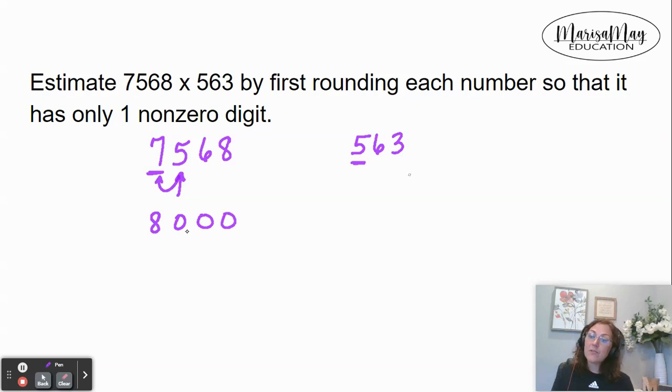Now we'll do the same thing over here with the 563. We're going to focus our attention on the digit just to the right. Ask ourselves, is this five or higher? Yes, it is. So we're going to kick that five up by one, making it six, and then filling the remaining place values in with zeros.